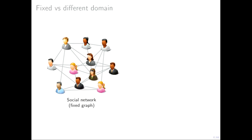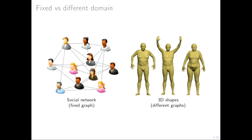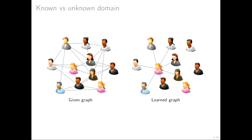We can distinguish between problems where the domain is fixed, like a social network at some snapshot in time, as opposed to applications where the domain changes — typical in computer vision and graphics, where we learn on a collection of shapes and then apply our model to different shapes. Finally, we can consider problems where the domain is unknown or partially given with noise. In patient networks, for example, we don't really know the right relations between patients, so we need to learn the graph together with the filters on the graph.